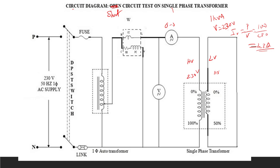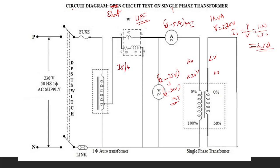Take an ammeter in the range of 0 to 5 amps MI since the rated current is 4.3 amps. For voltage, the short circuit voltage is 10 to 20 percent of rated, so fix a voltmeter of 0 to 75 volts or 0 to 30 volts MI. Since the current is maximum, use a unity power factor (UPF) wattmeter — 75 volt, 5 amp UPF wattmeter.